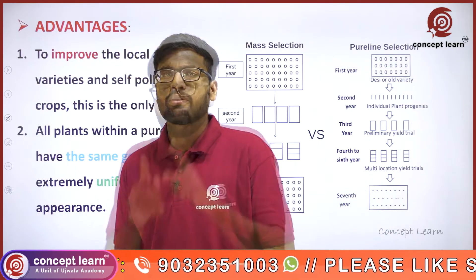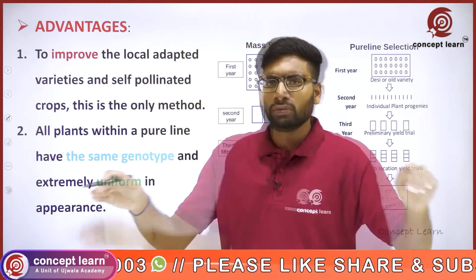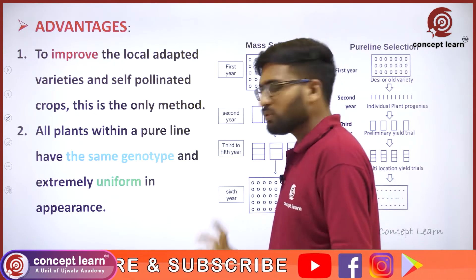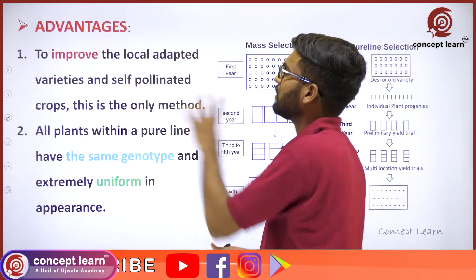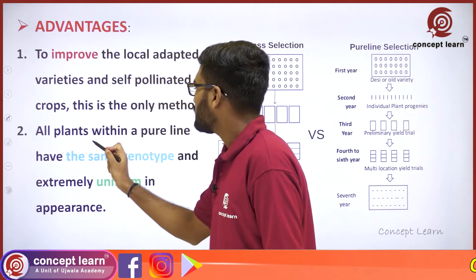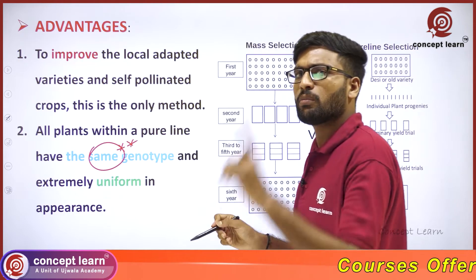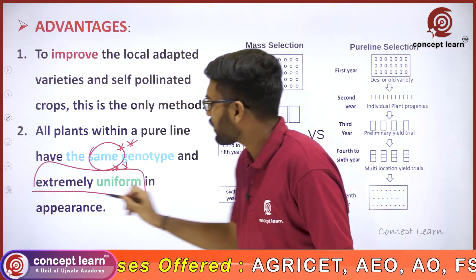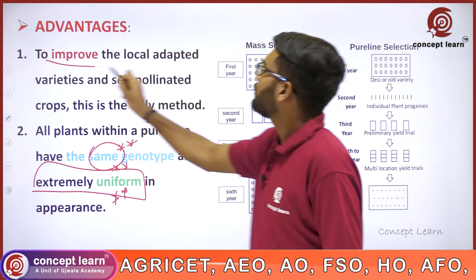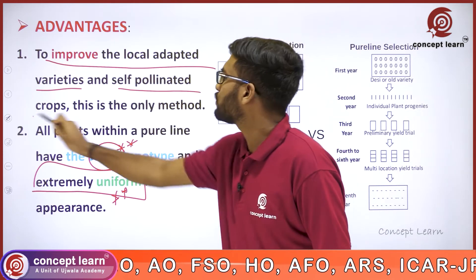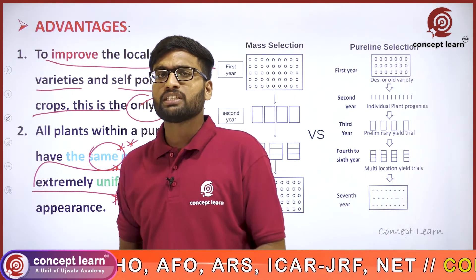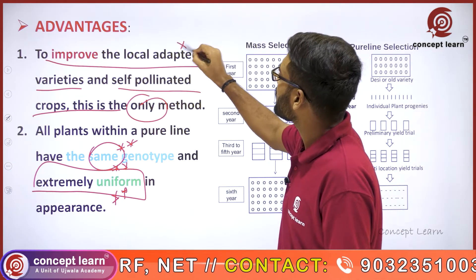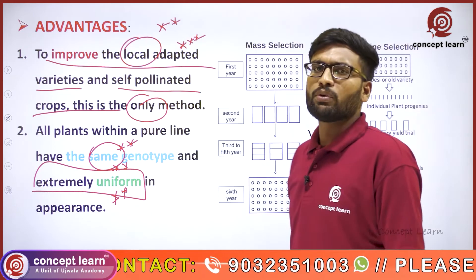What are the advantages of pure line selection? All plants within a pure line have the same genotype, since they are developed from a single plant. This makes them extremely uniform. We can improve local adapted varieties and self-pollinated crops through this method. Pure line selection is the method used for improvement of local varieties and self-pollinated crops.